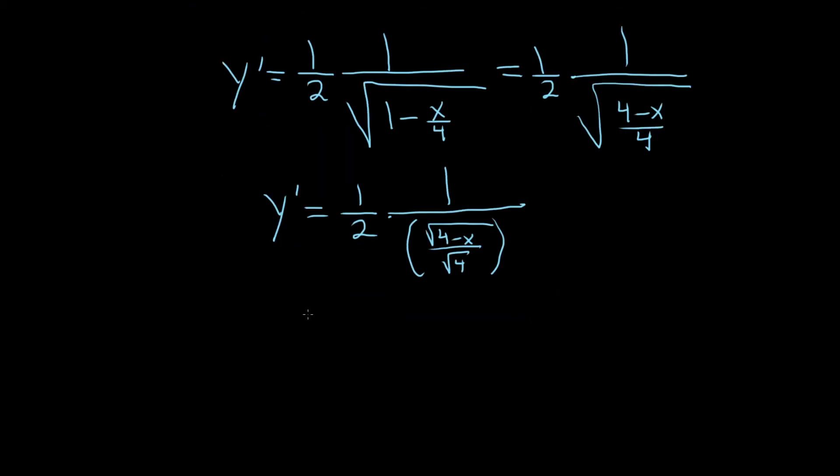So this is equal to 1 half times—and then it's 1 divided by all this. When you divide, you multiply by the reciprocal, so it's really the square root of 4 over the square root of 4 minus x.